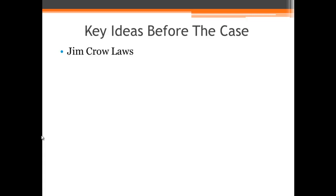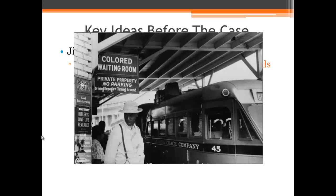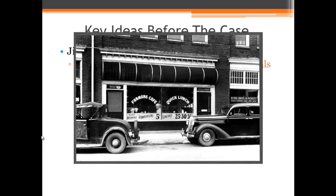Let's talk about some key ideas that will help you understand this decision. We have Jim Crow laws in the South, which are Southern laws that legally segregated individuals based on race. Here's a picture of a bus station in the South where there is a separate waiting room for African Americans. Another picture shows a diner where people were segregated within the diner and there were also separate entrances — a white entrance and a colored entrance.